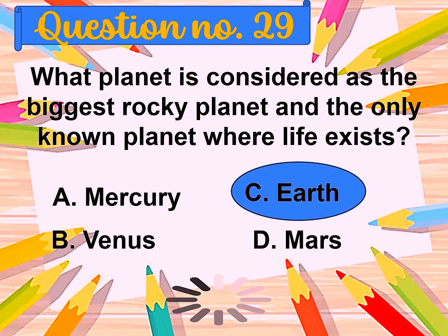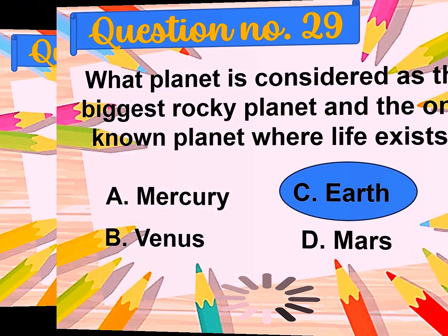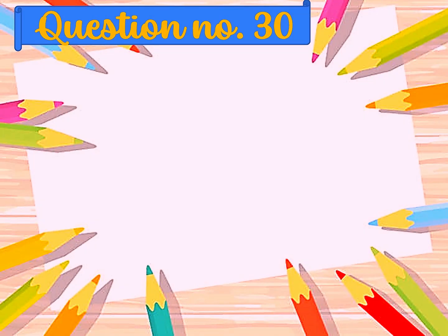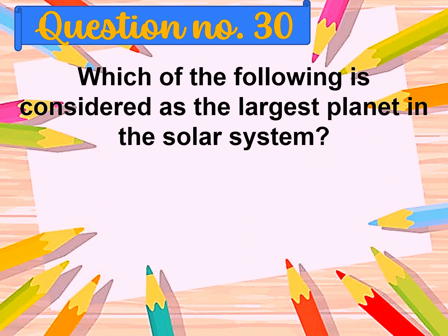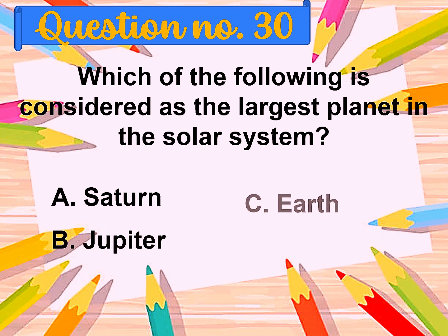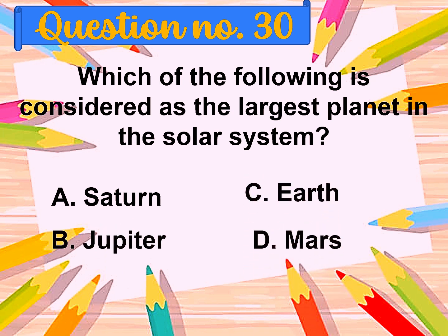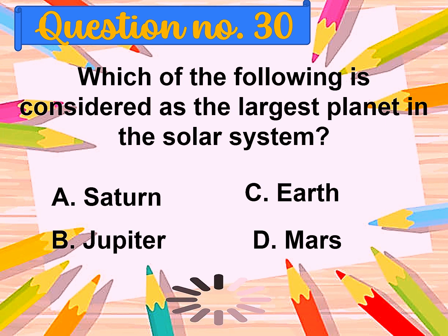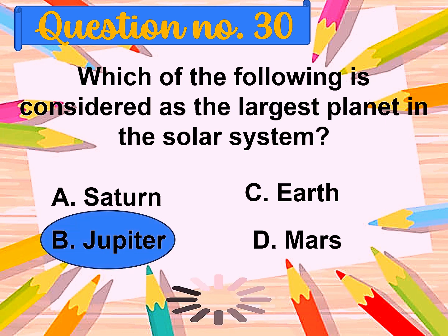Question number thirty: Which of the following is considered as the largest planet in the solar system? A. Saturn, B. Jupiter, C. Earth, D. Mars. The correct answer is Jupiter.